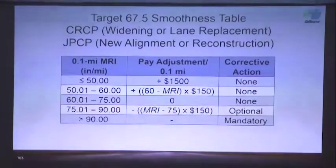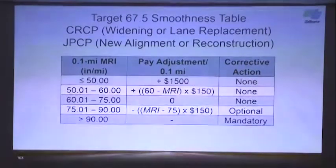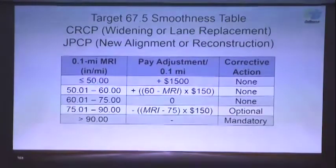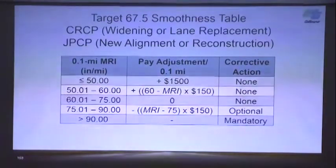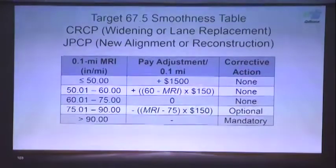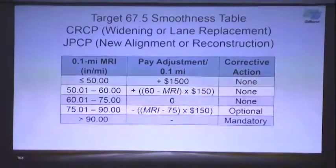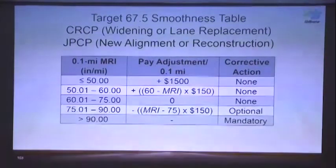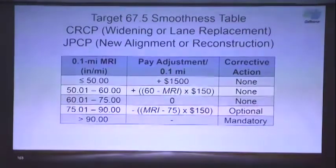The next table is Target 67.5, which applies to CRCP widening or lane replacement, and also JPCP new alignment or reconstruction. If the MRI is less than 50, the contractor gets the full incentive of $1,500. The full pay zone is from 60 to 75 MRI. The maximum disincentive is $2,250, which is prorated up to 90 MRI. Beyond that, mandatory corrections by grinding are required.